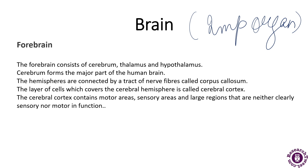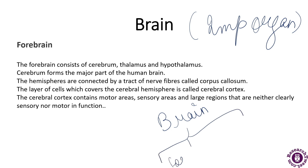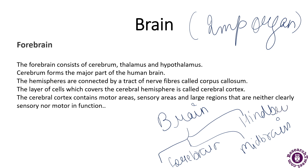The brain is enclosed within the skull and provides frontal, lateral, and dorsal protection. The brain has been further divided into three parts: the forebrain, the midbrain, and the hindbrain. I will be talking about each of these parts in detail.